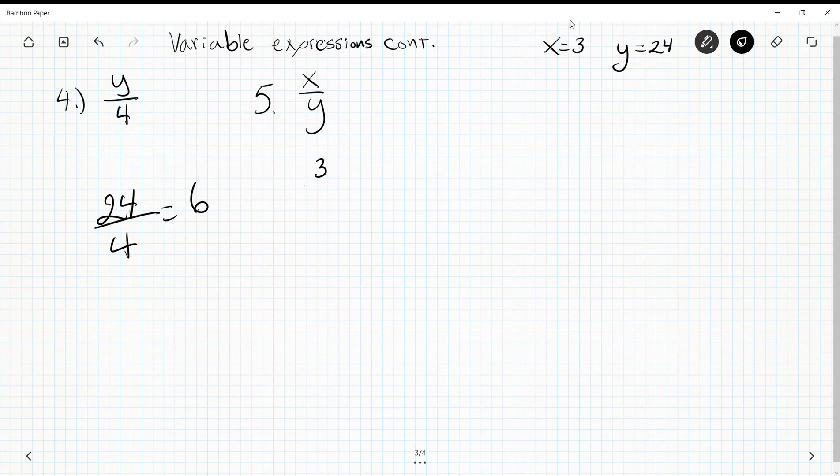And number 5 is x over y. You can replace x with 3 and y with 24. Well, anytime I've seen fractions, I want to reduce them. So I know I can divide both of these numbers by 3. 3 divided by 3 is 1, and 24 divided by 3 is 8. So my expression is simplified and evaluated once I've got it down to 1/8.